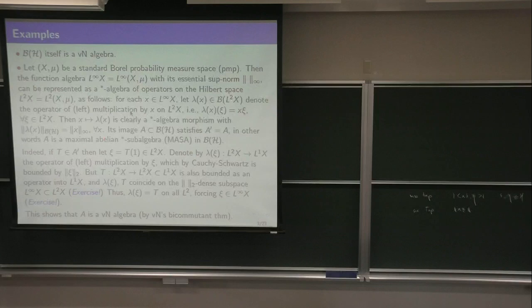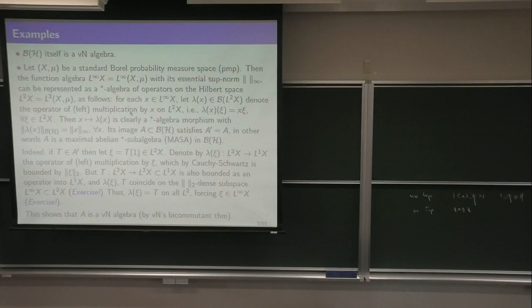It's isometric — this is a star algebra. The morphism is even isometric. Star algebra means L-infinity comes with its star operation, which is just taking the conjugation, and in B(H), it's the adjoint — taking the adjoints. And it's multiplicative and all that.